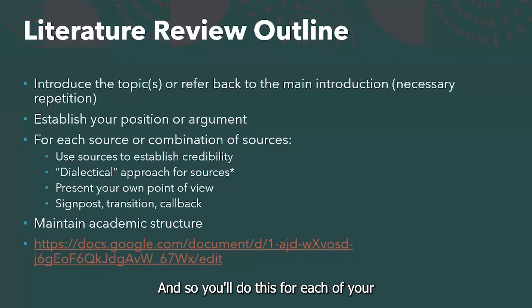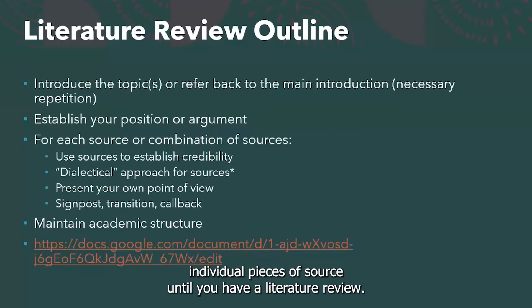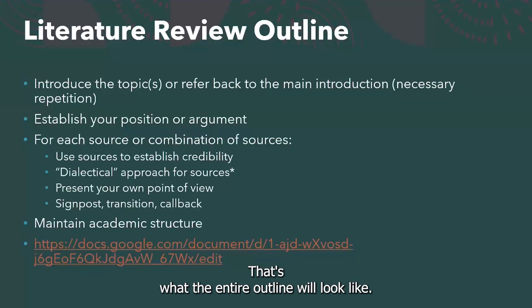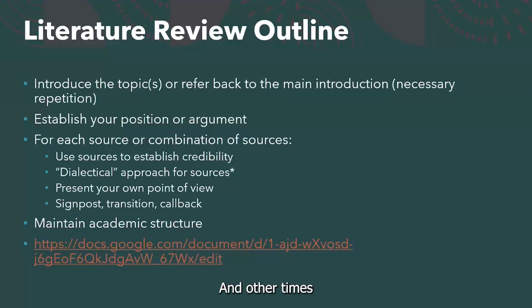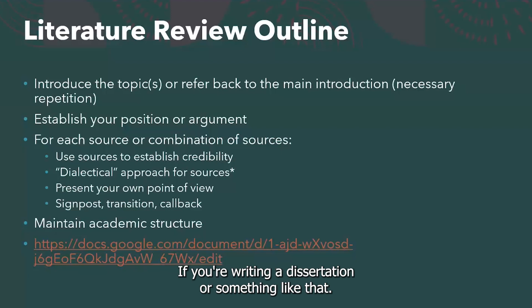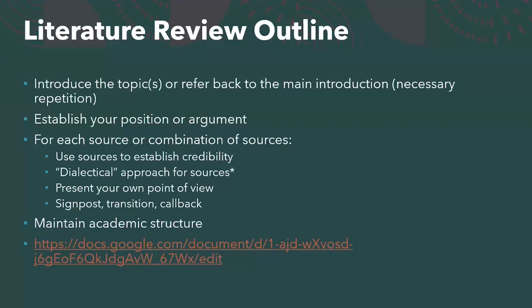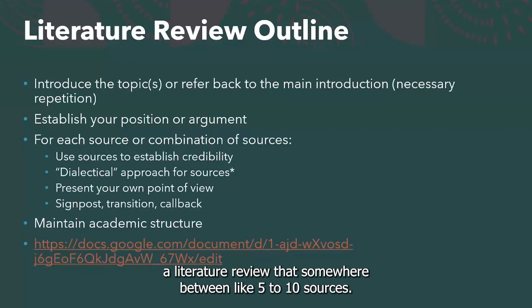And so you'll do this for each of your individual pieces of source until you have a literature review. That's what the entire outline will look like. Sometimes you'll have a literature review that's as short as five pieces, and other times you'll have a literature review that's 40 or 50 pieces, if you're writing a dissertation or something like that. Most professors, I would think, they're giving you a literature review that's somewhere between like five to 10 sources.